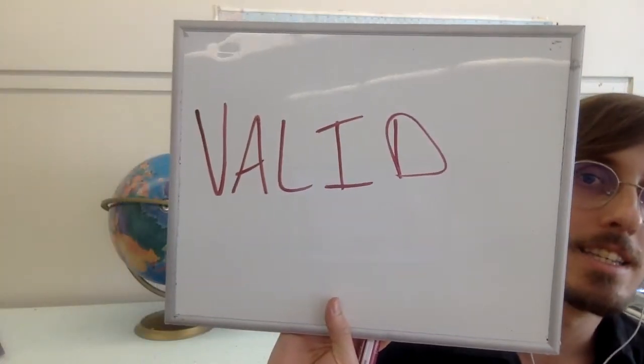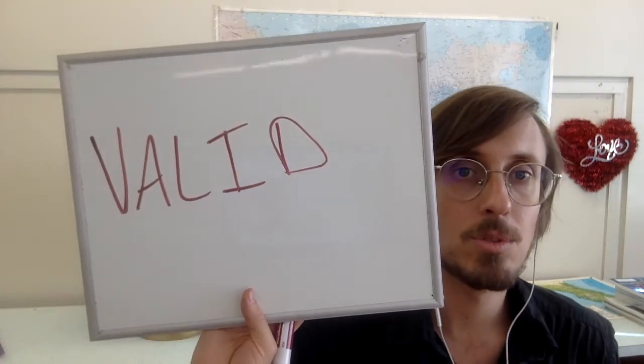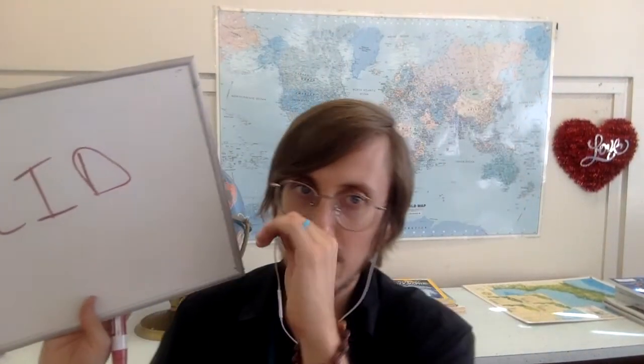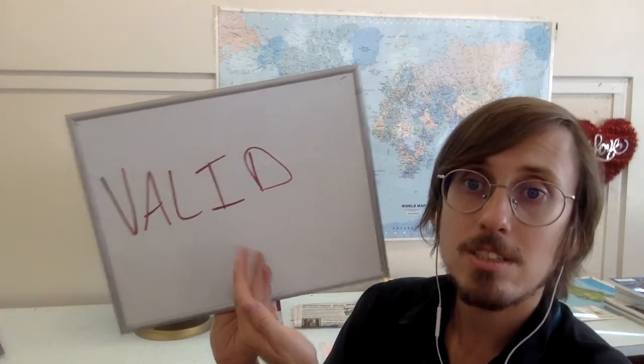And number ten: valid. Valid. V-A-L-I-D. This word is used for something that is current and acceptable — it meets the requirements. For many jobs, you need an ID, an identification, and you need a valid ID — an ID that is current, correct, and acceptable. Imagine you have a driver's license from five years ago and it expired five years ago: it's not valid. If you have a new driver's license, it is valid. And that's the end of this video.